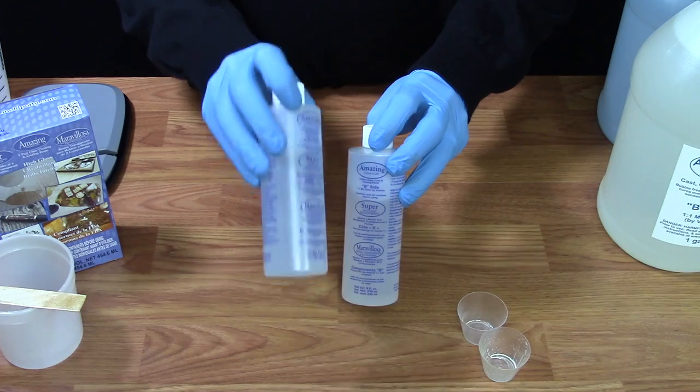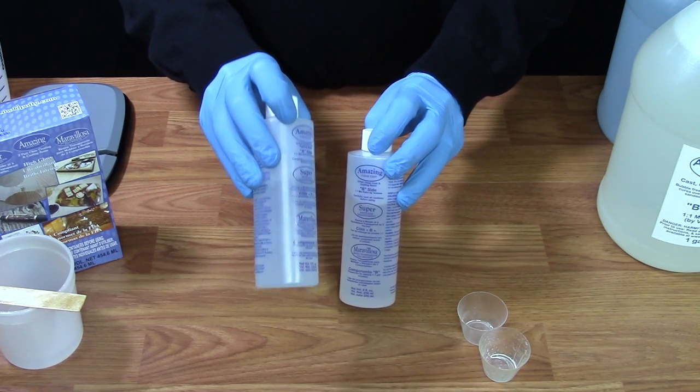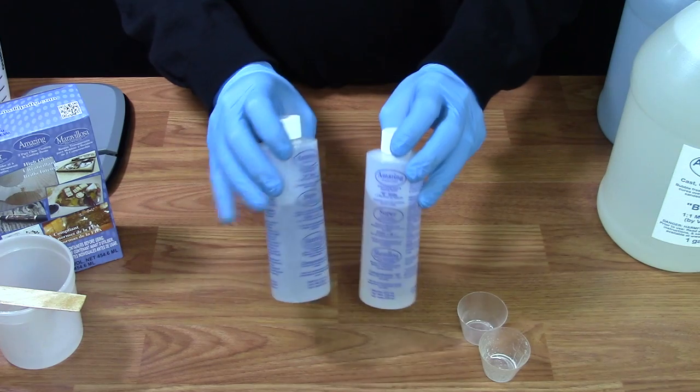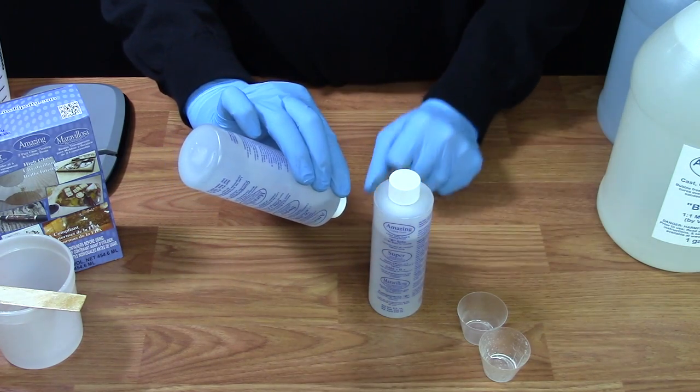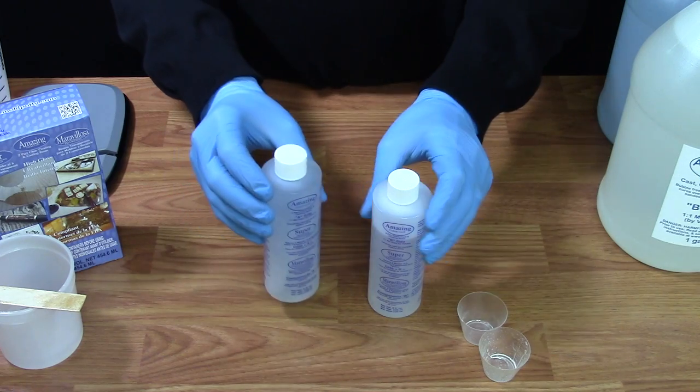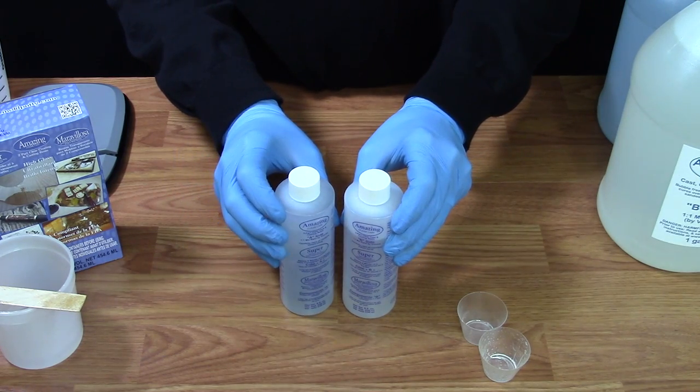You'll also find that the A side of the Amazing ClearCast is a lot thicker than the B side. So if you're emptying the entire bottles, make sure you give more time for the A side to drain out completely versus the B side. You always want to make sure you stay on that one-to-one mix ratio by volume.